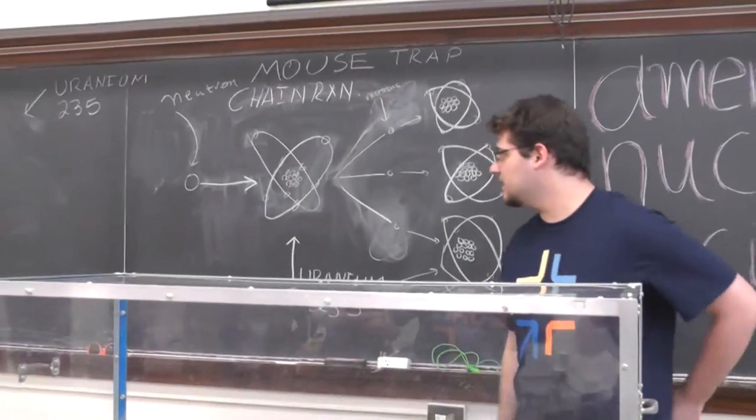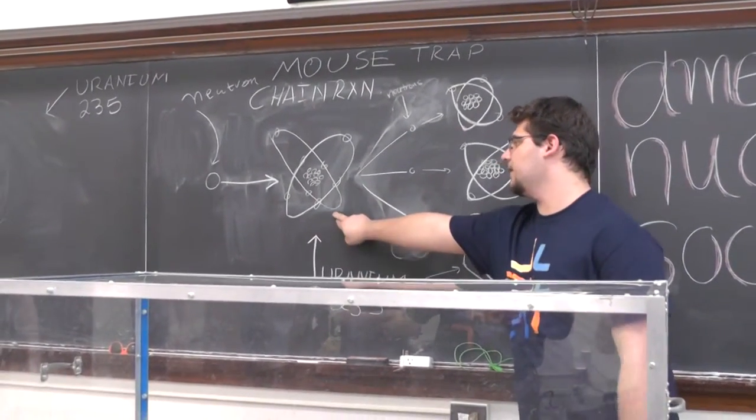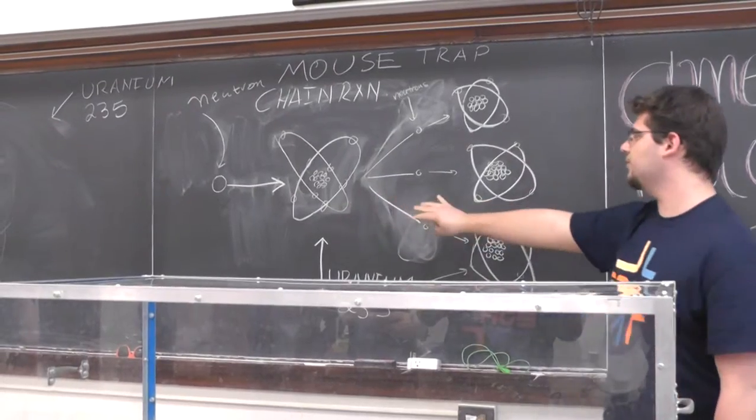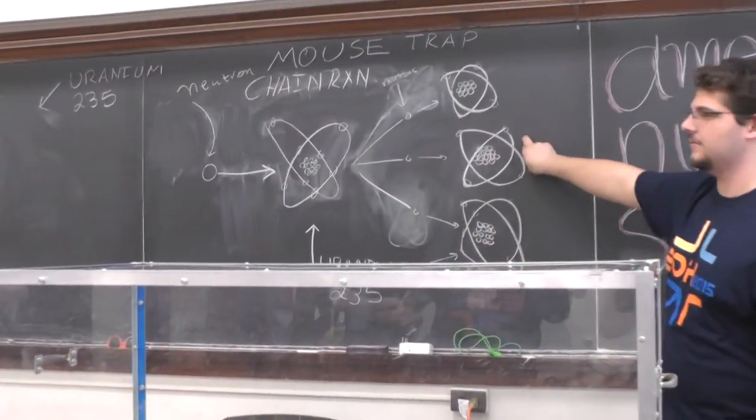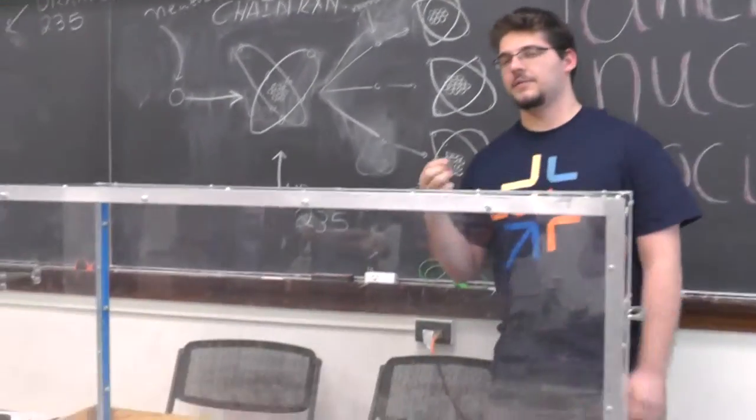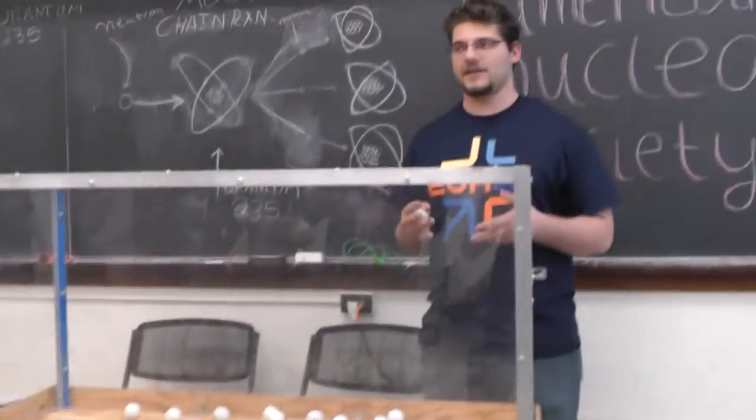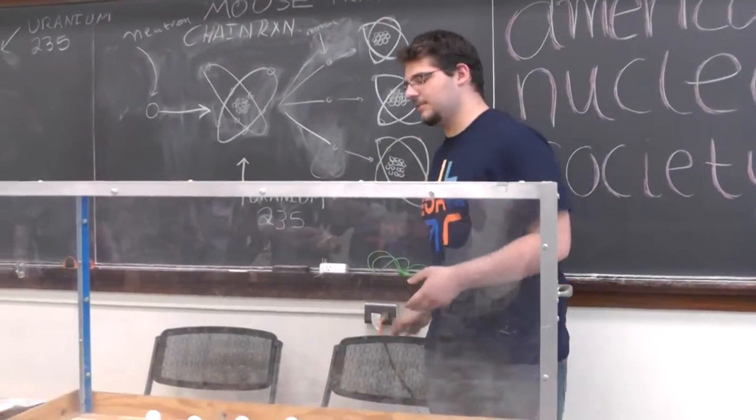What happens is when we send in a neutron, it hits one of the unstable uranium atoms, which then releases energy and other neutrons. Those other neutrons travel and hit other uranium atoms, which release more energy and more neutrons. This chain reaction drives the entire energy-making process.